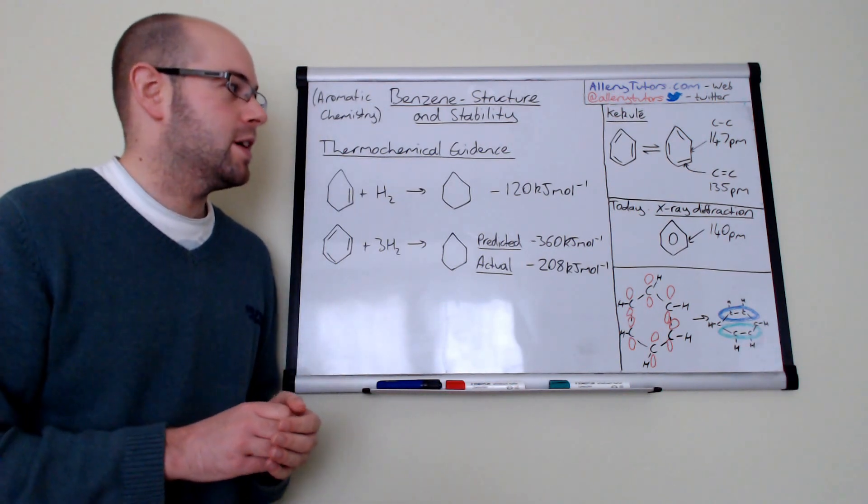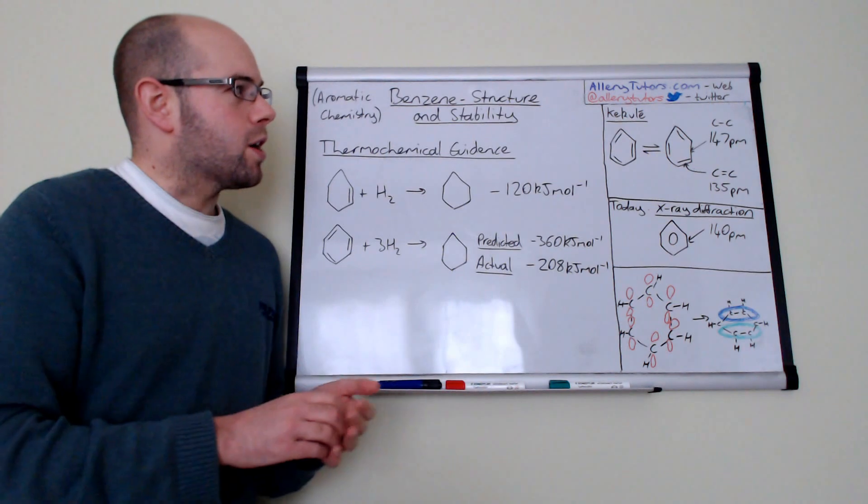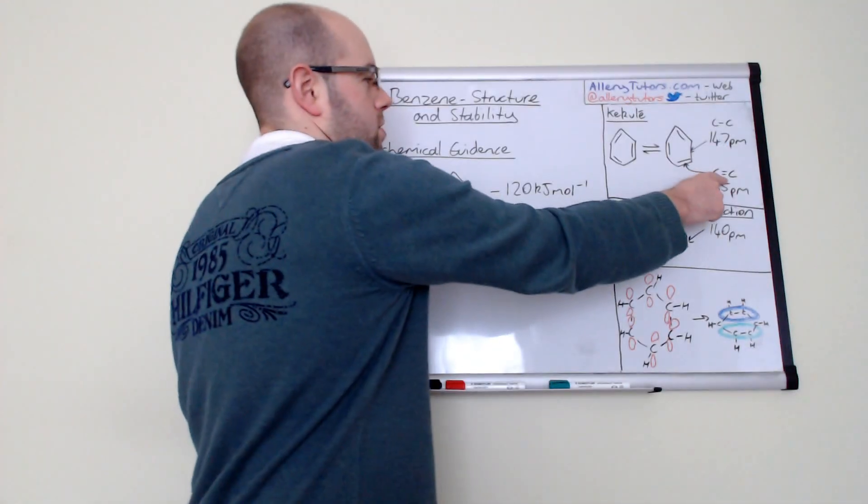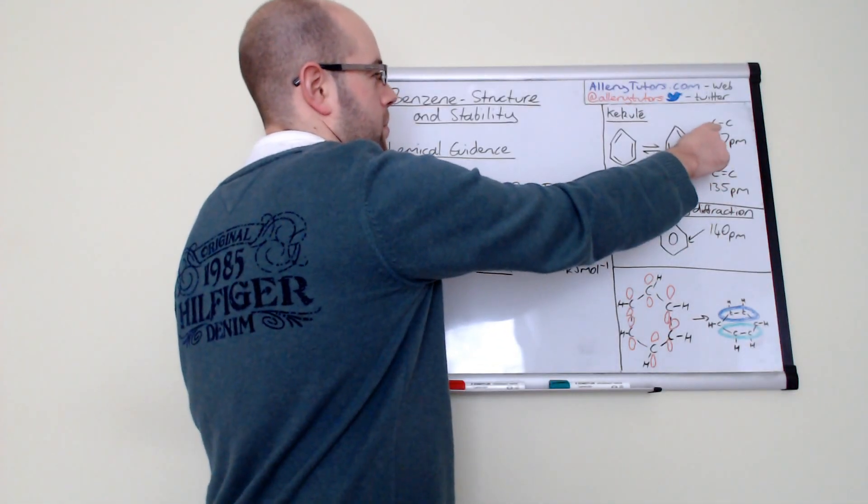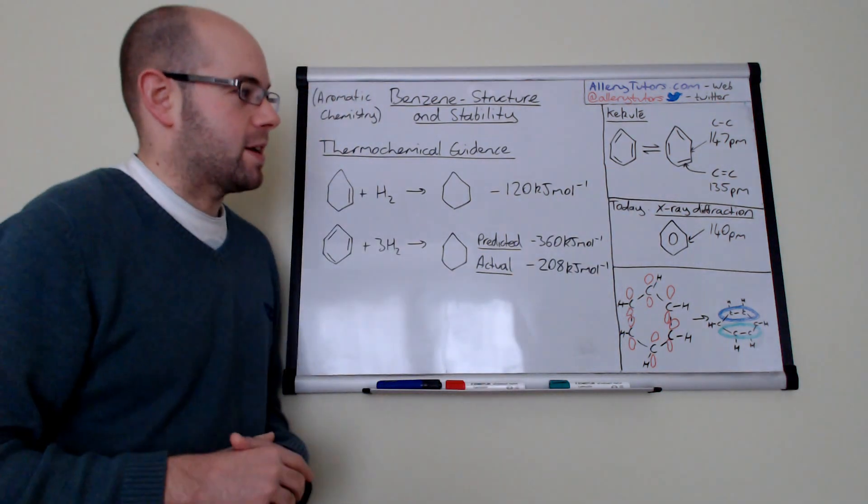According to Kekulé's model we should have a C double bond C and a C single bond C, but actually when we did some x-ray work,